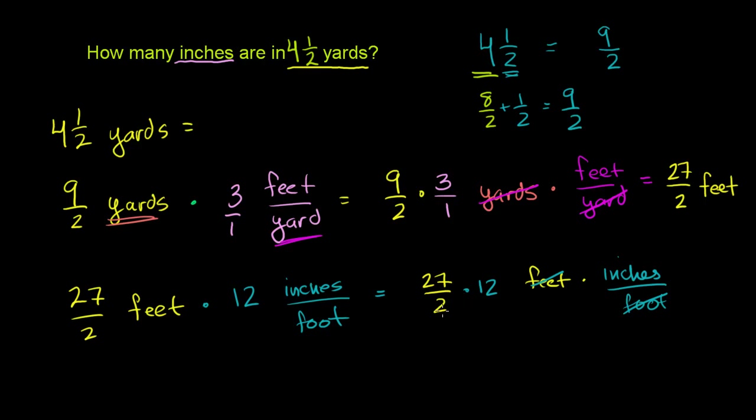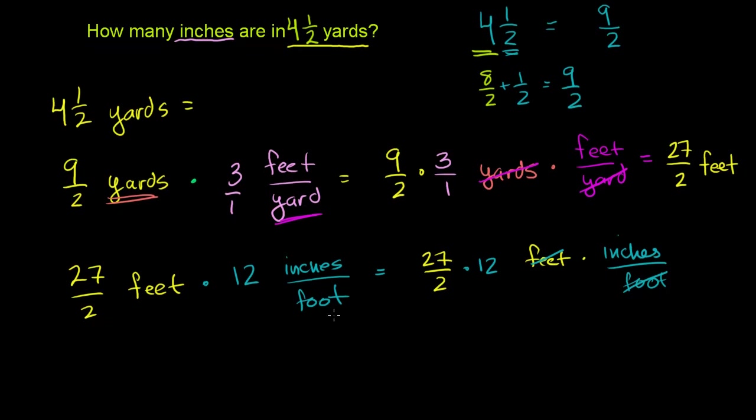And you have 27 times 12 divided by 2 inches. And what we could do here is that our final answer is going to be 27 times 12 over 2 inches. And before we multiply the 27 times 12 and then divide by 2, you immediately see, well, I could just divide 12 by 2 and 2 by 2, and it makes our computation simpler. 12 divided by 2 is 6. 2 divided by 2 is 1. So it becomes 27 times 6 inches. And let's figure out what that is.